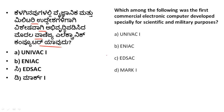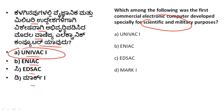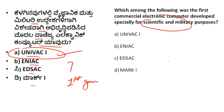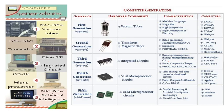The first commercial electronic computer for scientific and military purposes: options are Univac 1, ENIAC, EDSAC, and Mark 1. Univac 1 is the right answer. Univac is Universal Automatic Computer - first generation computer. Simple: first generation computer.